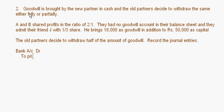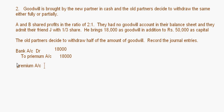First entry: bank account debit to premium account for 18,000 rupees — J is bringing in goodwill. Then this 18,000 will be transferred to the partners: premium account debit to A's capital account and to B's capital account. The new ratio is not given, so we first need to find the new ratio and sacrificing ratio.